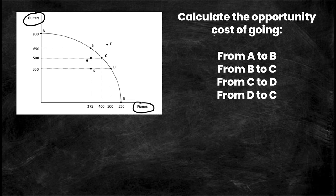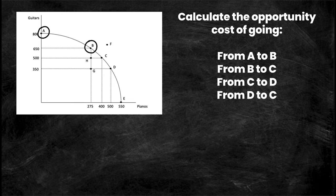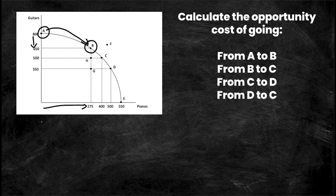But how do you use these points to calculate opportunity costs? That's what we're looking at today. Starting with the opportunity cost of going from point A to point B: point A is at 800 guitars and zero pianos, and point B is at 650 guitars and 275 pianos. Moving from A to B, I need to look at the change in guitars and the change in pianos. You're giving up guitars and receiving more pianos. Opportunity cost is simply what you give up to obtain one more unit of the other good — so I want to know how many guitars I give up to receive one more piano.